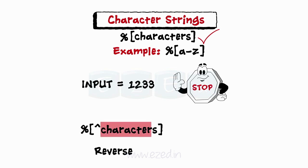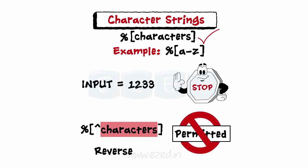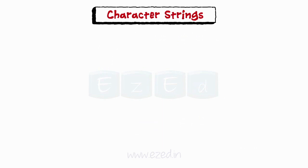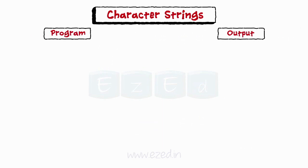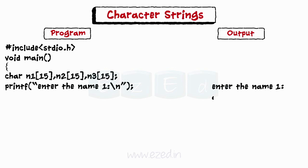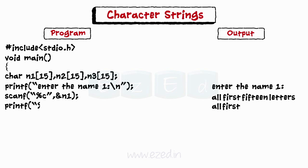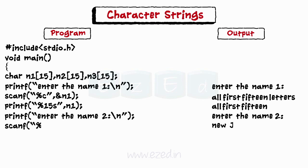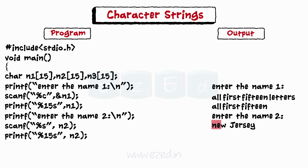The specification %[^chars] does exactly the reverse: it means that the characters specified after the circumflex are not permitted. Let us write a program to understand the reading of strings. We start by declaring the main function followed by variables n1, n2, n3 which are character arrays. Then we ask the user to enter the first name, which we store in n1 and display 15 characters of n1. As our string is scanned only till a blank space is encountered, only the first word is stored and displayed.